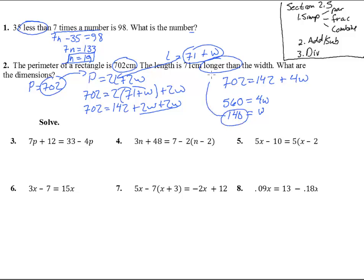Now, this only gives us W. We can stick that back in there and say 140, 71 bigger than that, is 211. So the width is 140 centimeters, and the length is 211 centimeters.